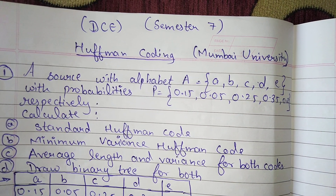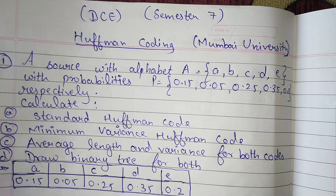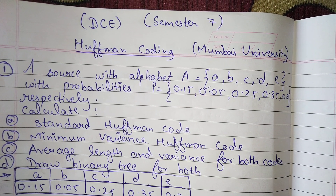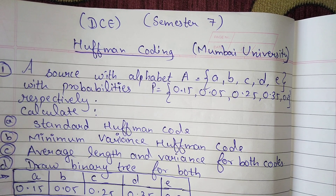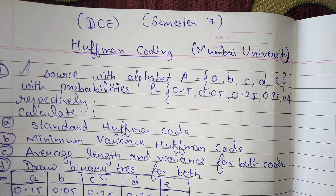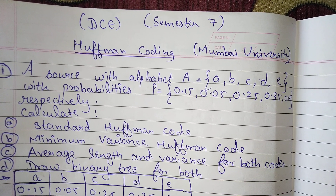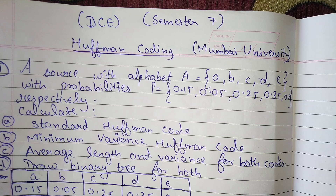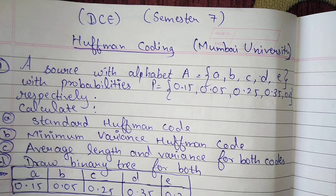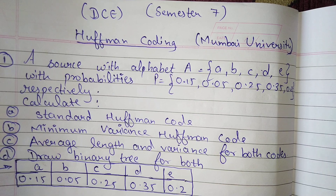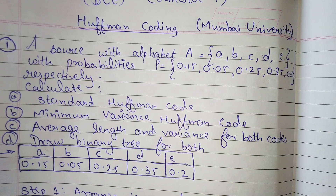Hello everyone. In this video we are going to look at Huffman coding. The question is: a source with alphabet a, b, c, d, e with respective probabilities 0.15, 0.05, 0.25, 0.35, and 0.20. We have to calculate the standard Huffman code, minimum variance Huffman code, average length, and variance for both codes, and then draw the binary tree for both.